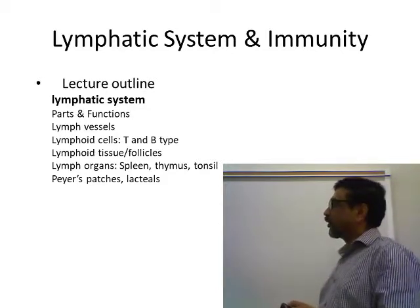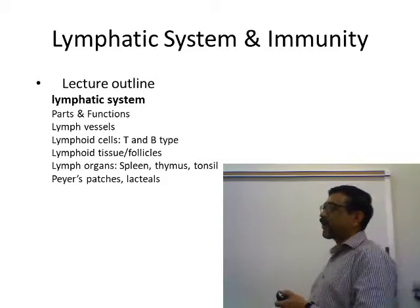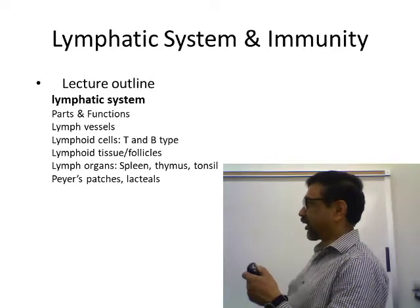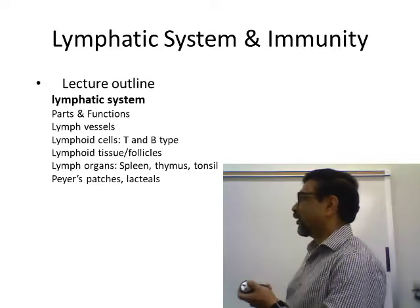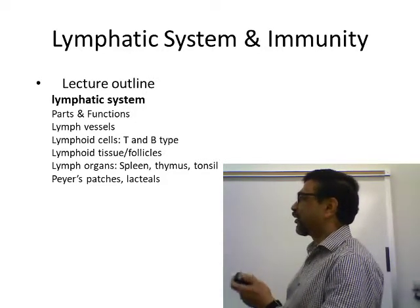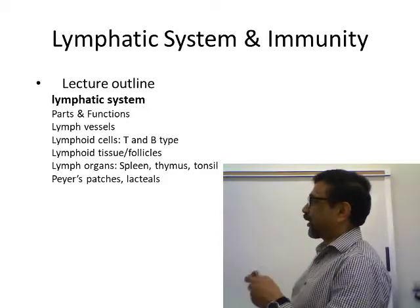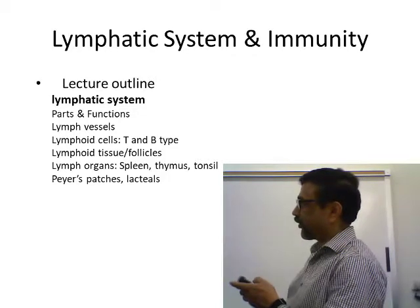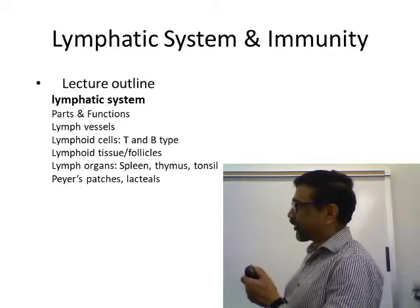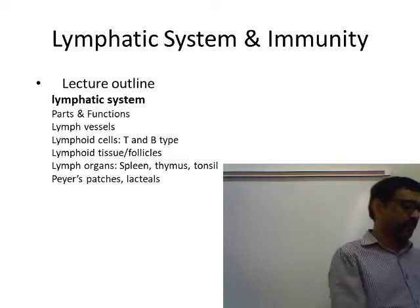We will talk about lymphoid follicles inside the lymph organs. We will also discuss large lymph organs: spleen, thymus, and tonsil. Then we will talk about Peyer's patches and lacteals. Those are the main topics. First, the parts of the lymphatic system.